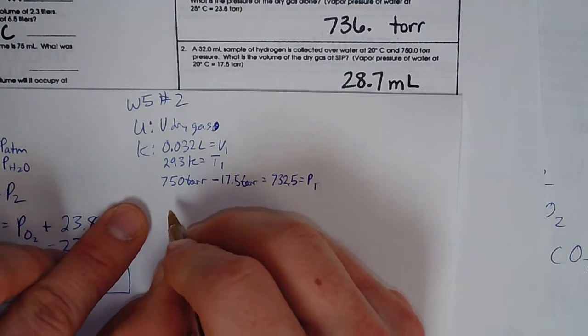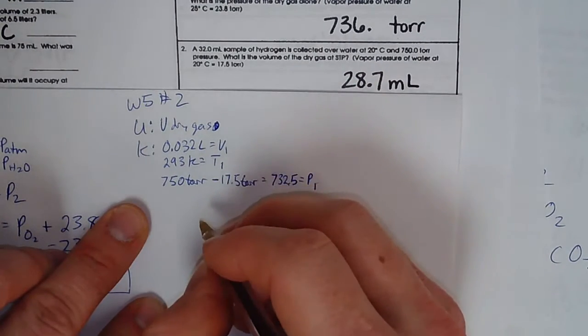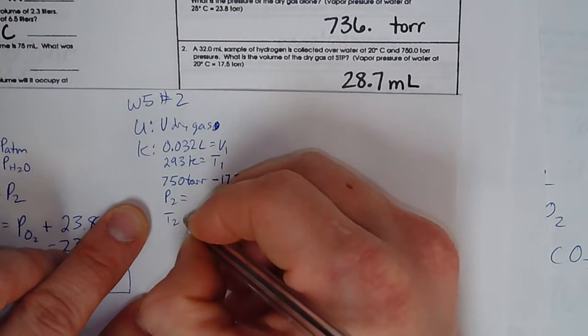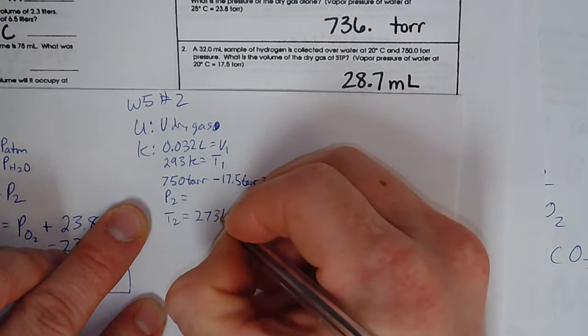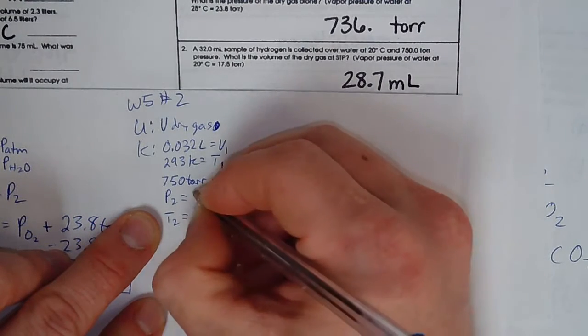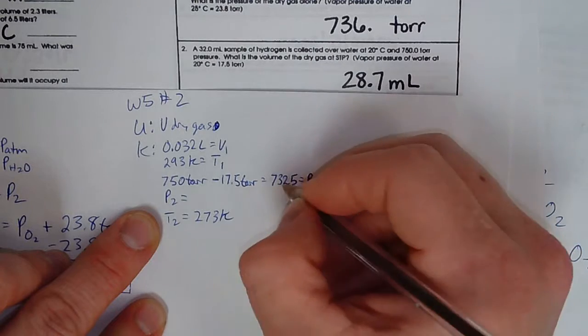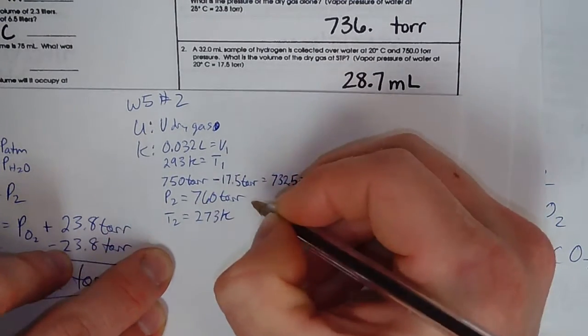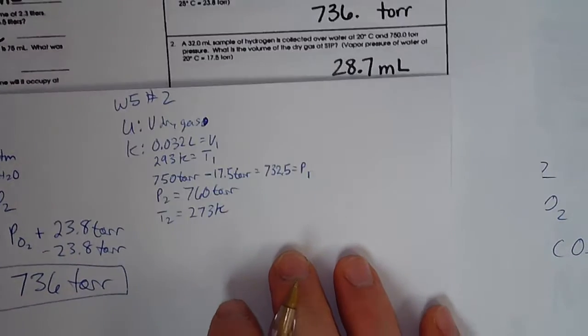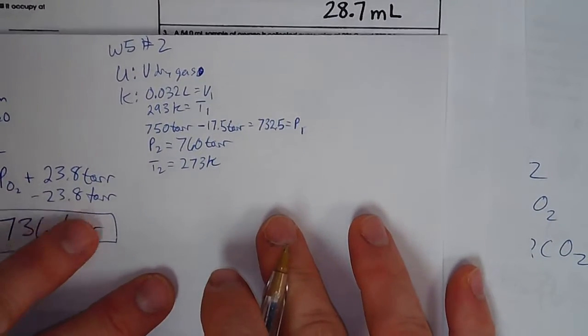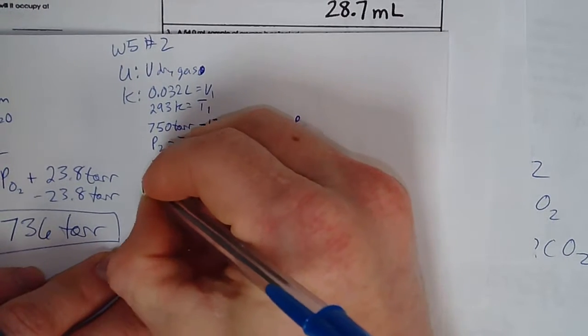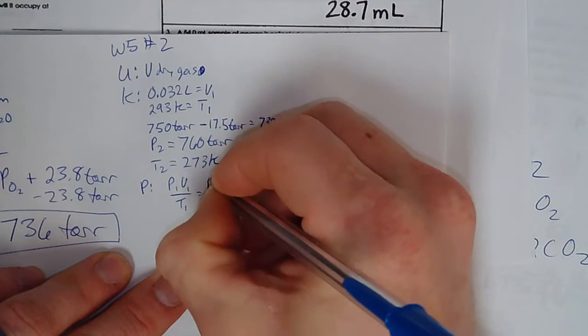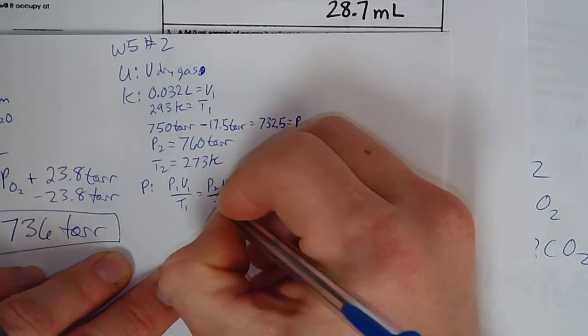All right, our P2 and T2 are standard temperature and standard pressure. Standard temperature is 273 Kelvin. Standard pressure is, let's say we want to be a torr, so 760 torr. All right, so very quickly our Dalton's Law of Partial Pressures question turned into a combined gas law question. So here's our plan: P1 V1 over T1 equals P2 V2 over T2.